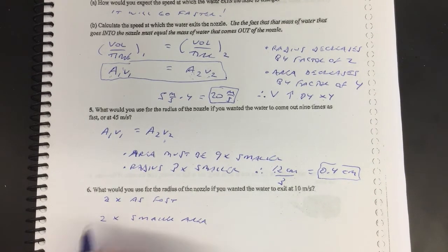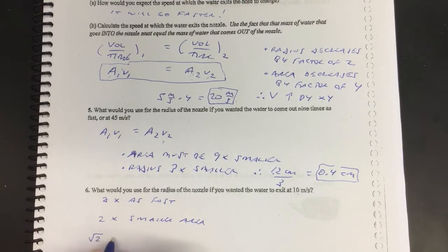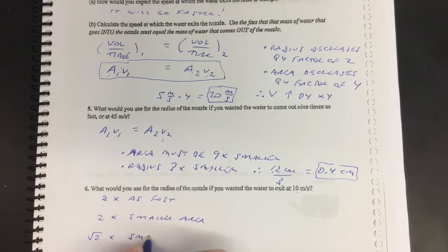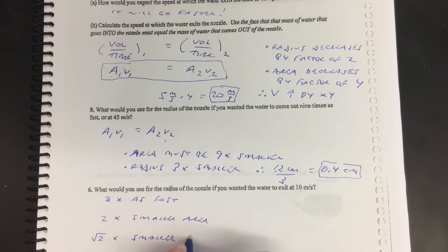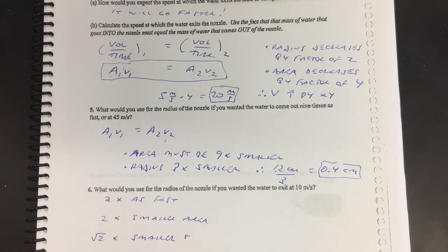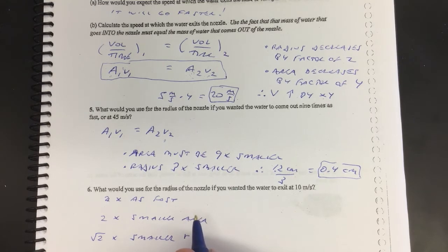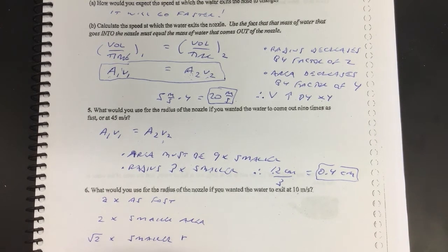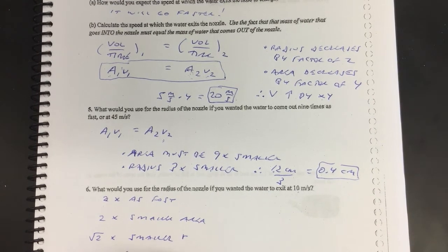And that means the radius needs to be root 2 times smaller, square root of 2 times smaller radius. And so the way to make something smaller by factor root 2 is you divide by root 2. So the old radius was 1.2 centimeters, so you say 1.2, then we would need to divide that guy by root 2.